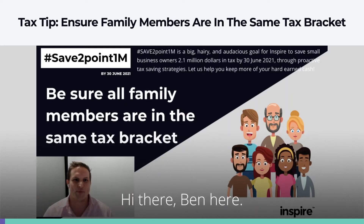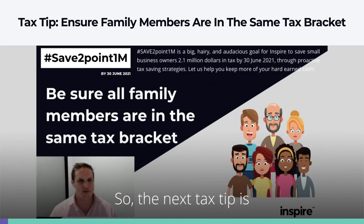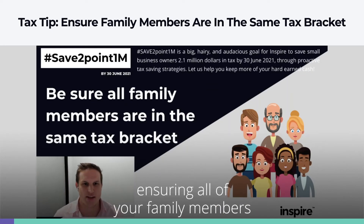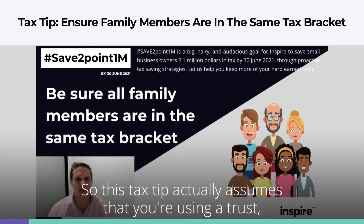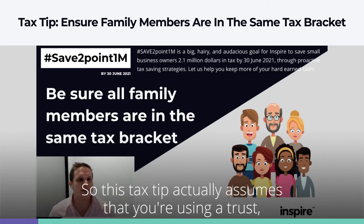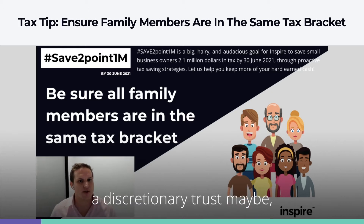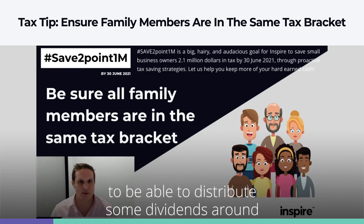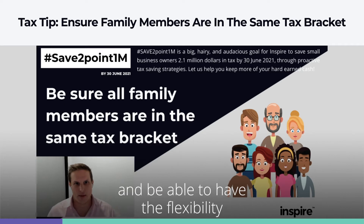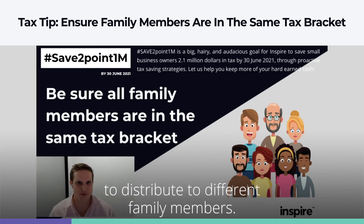Hi there, Ben here. The next tax tip is ensuring all of your family members are in the same tax bracket. This tax tip assumes that you're using a trust — a discretionary trust maybe — or a company that might be owned by a trust, to be able to distribute dividends and have the flexibility to distribute income to different family members.